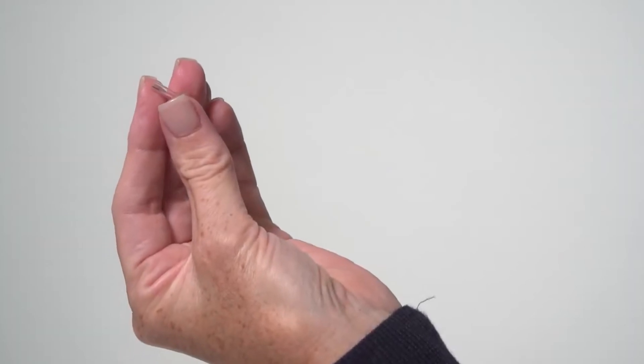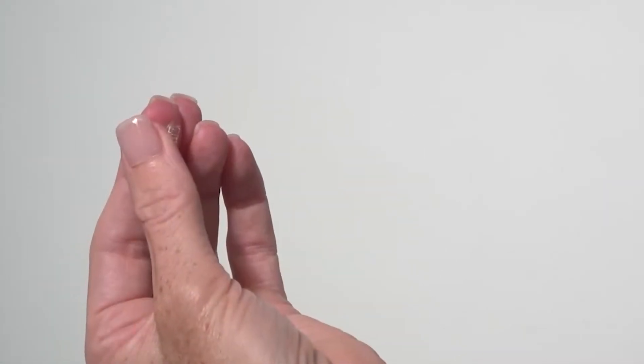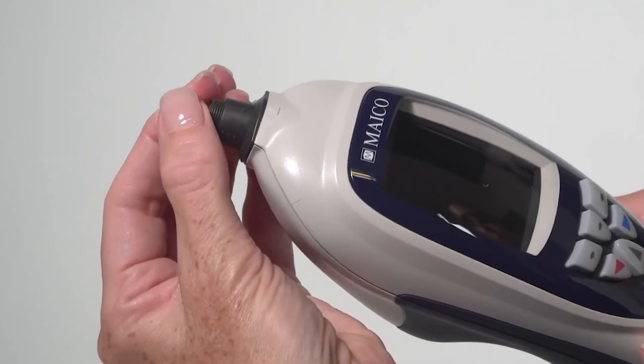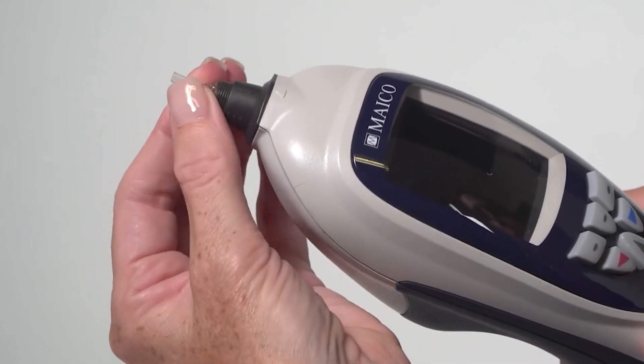Once visual inspection shows the probe tube is clean, place the probe tube back on the probe. Make sure to align it appropriately on the probe as it can only be seated in one direction.